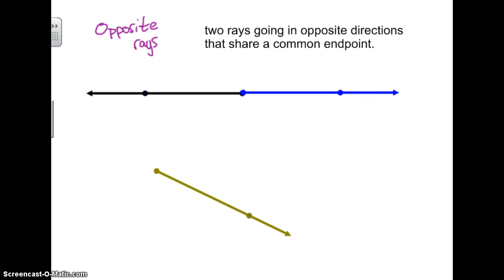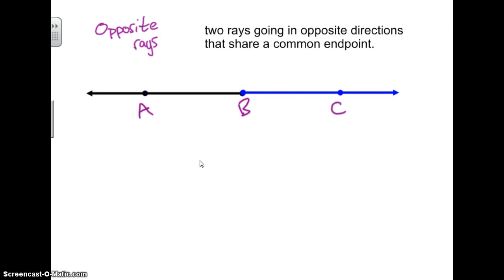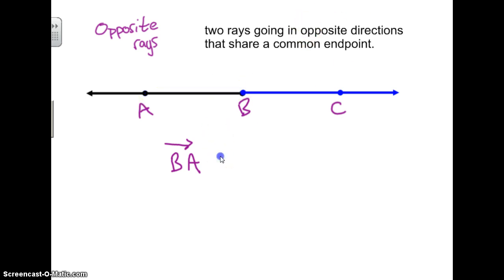So, let's talk about naming a pair of opposite rays. Let's say you have points A, B, and C, and we're talking about the blue ray and the black ray. You could start with ray BA — the ray that starts at B and passes through A. And then we've also got the ray that starts at B and passes through C. You could see it here starting at B and passing through C.